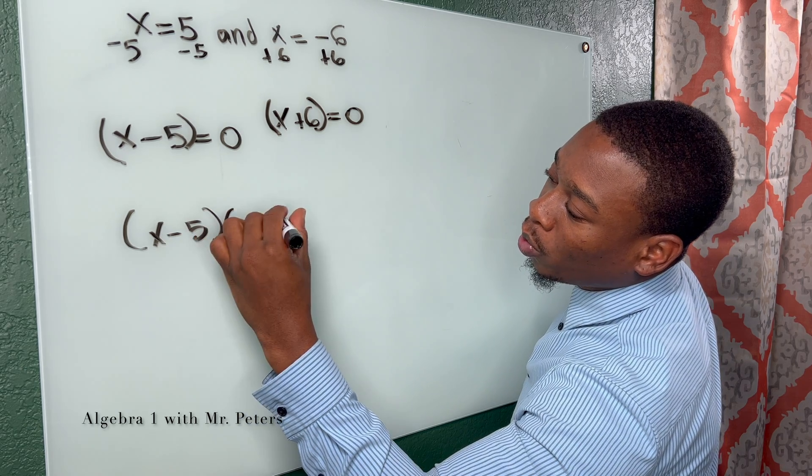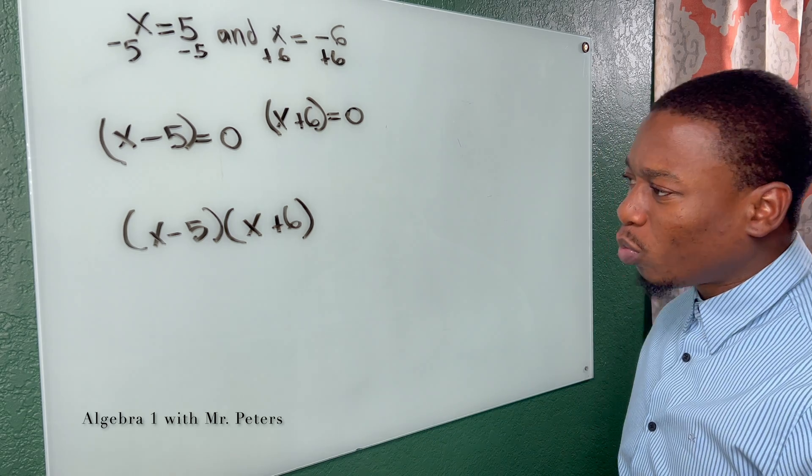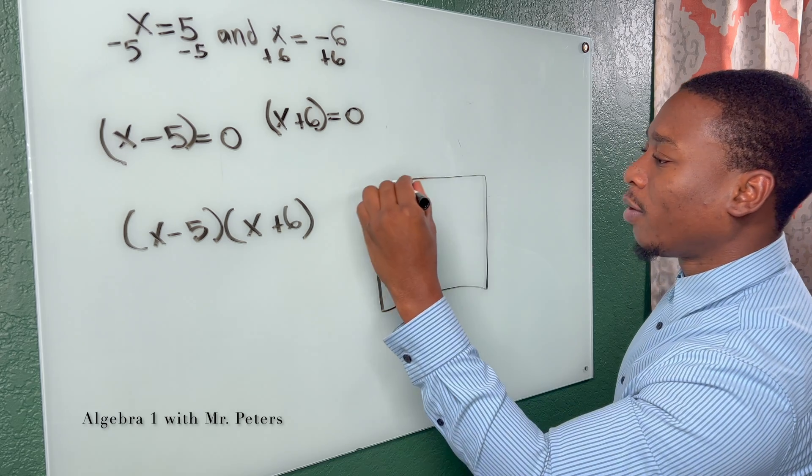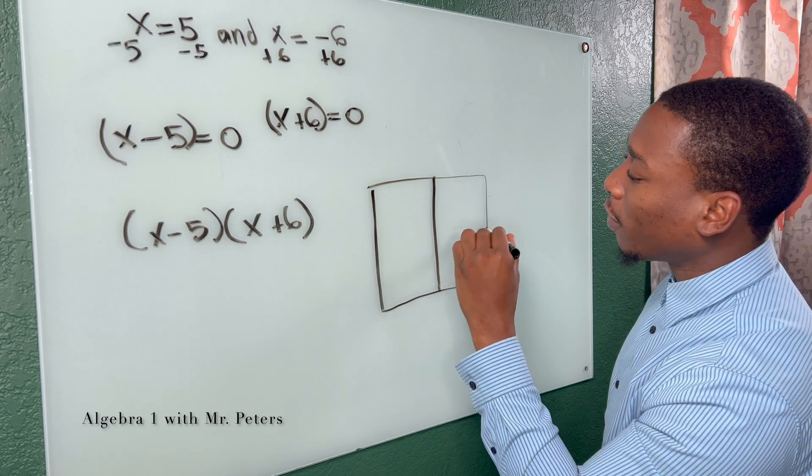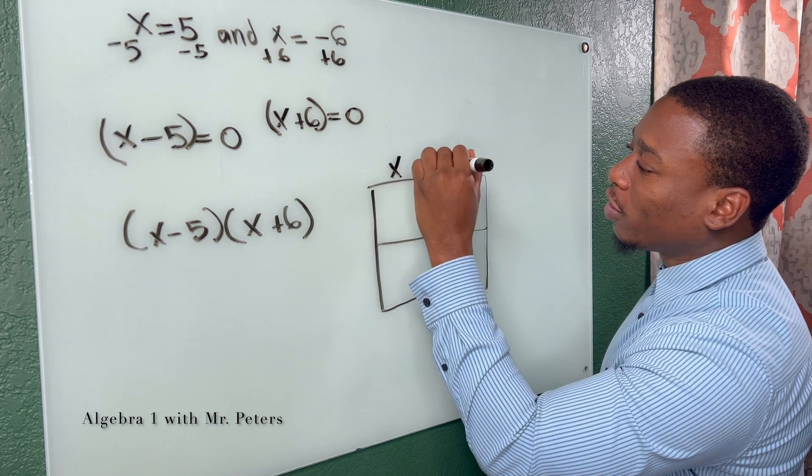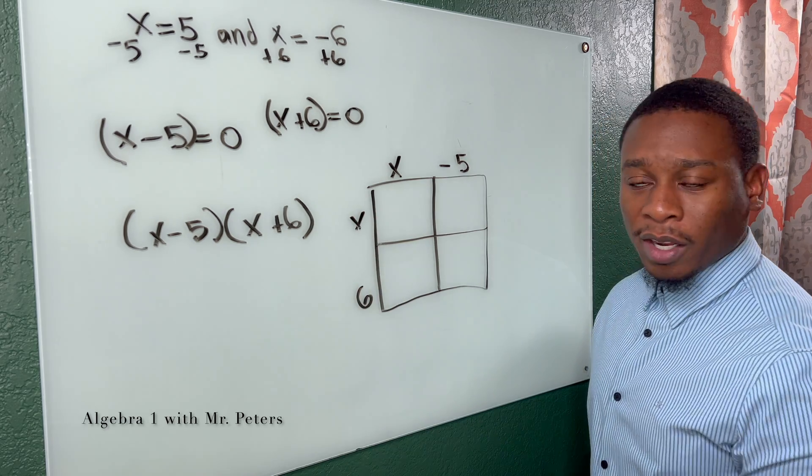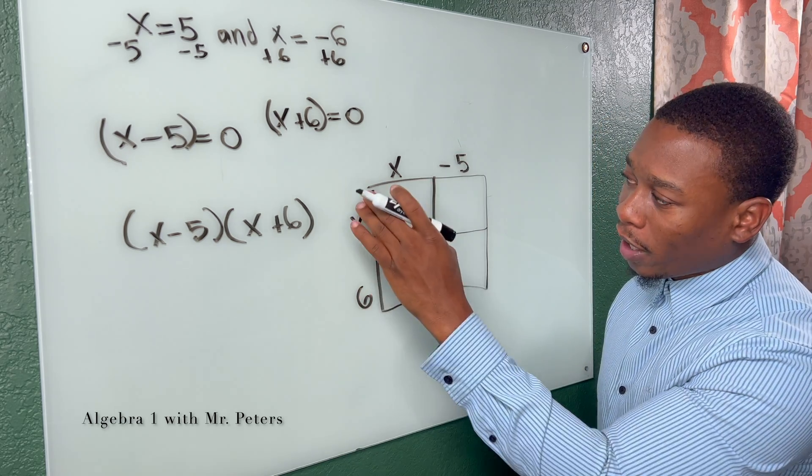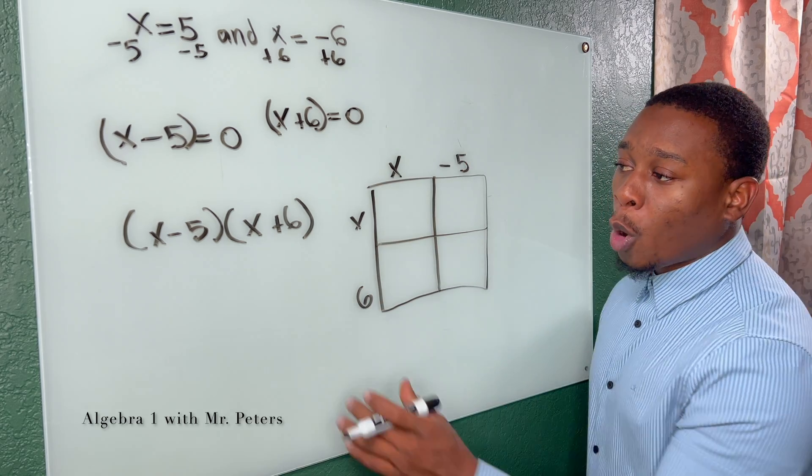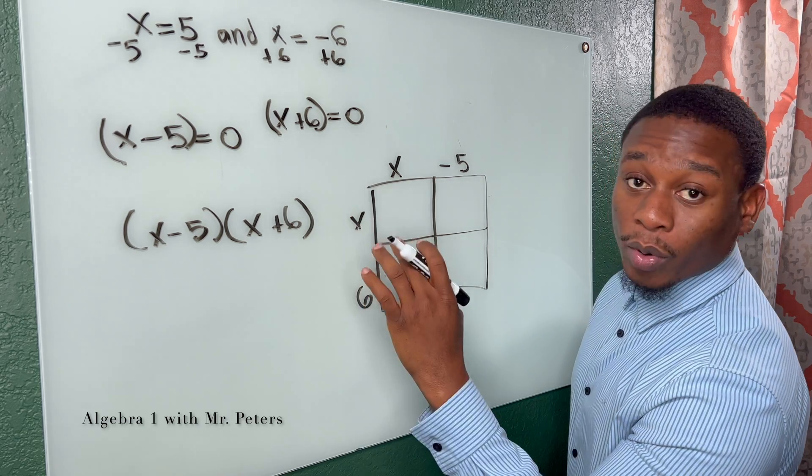So now what we need to do is foil. But when I foil guys, I normally use the box method. I'm going to use it in this because I just think it's a great method for students, especially if they have issues with foiling. So we're going to keep our factors together, x minus five on top, x plus six on the side. If we switch the other way around, x minus five on the side, x plus six on top, we would get the same answer. We just have to keep these terms that's in parentheses grouped together, okay?